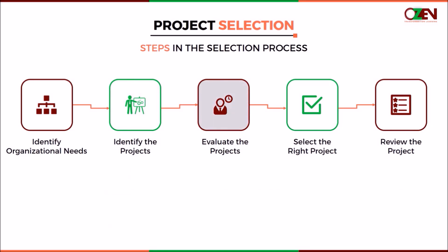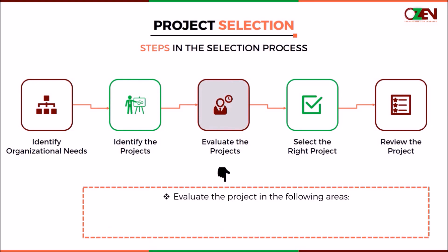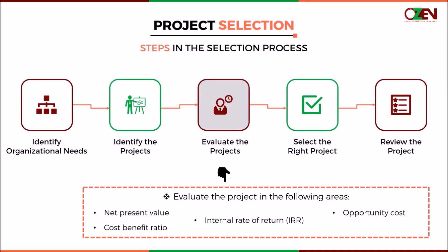In the next step, the projects that support the organization are further examined and evaluated in the following areas: Net Present Value, or NPV, which is the difference between the present value of estimated cash inflow and outflow of the project over the project lifecycle — in other words, the profitability of the project in today's dollar value. Cost-benefit ratio, which is a ratio of the monetary costs and benefits of a proposed project. Internal rate of return, or IRR, or the rate at which the NPV is equal to zero. Opportunity cost, which is the cost of selecting one project over another. Payback period, which is the total time required for recovering the initial investment made in a project.